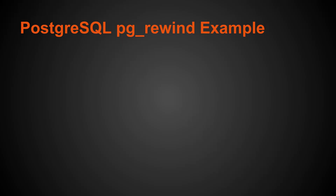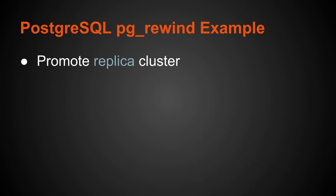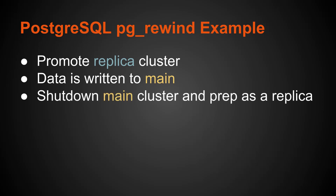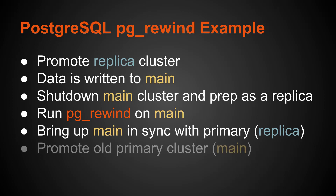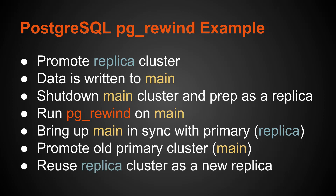In terms of the example we're going to run through: we're going to have a primary and a replica setup actively doing replication. We're going to promote the replica cluster, write data to the main database cluster, then shut down the main cluster and prep it as a replica. We're going to run PG Rewind to rewind the data that was written to the main cluster, bring it into sync with the current primary, and then promote the old primary cluster back as main and reuse the replica cluster as a new replica, so everything goes back to the state it was before the failover.